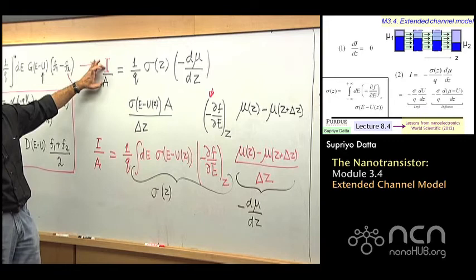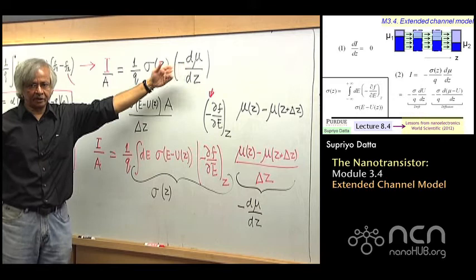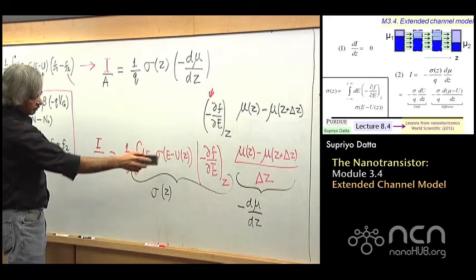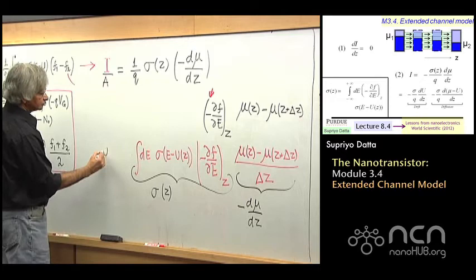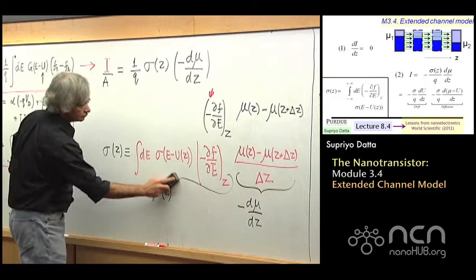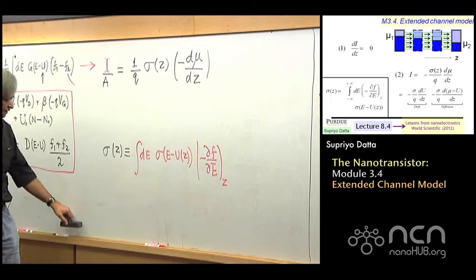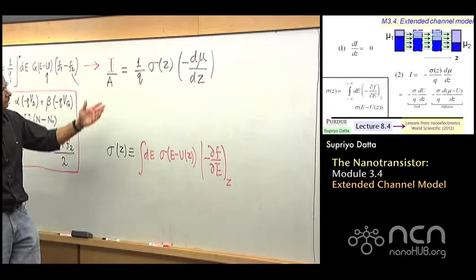So overall what we get is: the current per unit area depends on this derivative of the electrochemical potential — the quasi-Fermi level — times this conductivity sigma(Z), which could be varying with Z. And the way you find the conductivity is from the expression for sigma(Z).